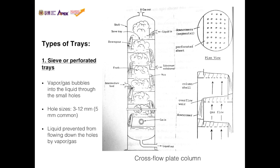There are three types of trays: sieve or perforated trays, valve trays, and bubble cap trays. For sieve trays, vapor or gas bubbles into the liquid through small holes. Hole sizes range from 3 to 12 millimeters, with 5 millimeters being common. Liquid is prevented from flowing down the holes by the upward gas flow. Liquid comes in from the top, flows over the trays, and the gas bubbles through. The resulting downcomer liquid goes to the next tray and the process repeats.